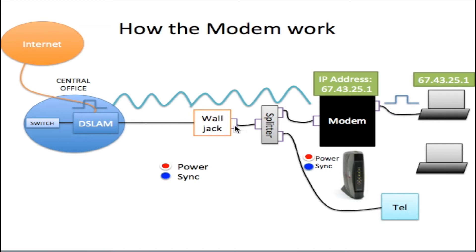Once these signals are received at the wall jack, a splitter is plugged into it. This splitter has both your internet information and your telephone information coming in, so it splits the two — sending the telephone information in one direction and the internet information in the other. You plug your modem in where the internet information is, and your telephone on the other side. If this splitter is not used, you'll get interference between the telephone and the modem, so you would not have a very good internet line. Once the modem is plugged in and powered up, the analog information is received and converted back to a digital signal, then sent off to your computer.